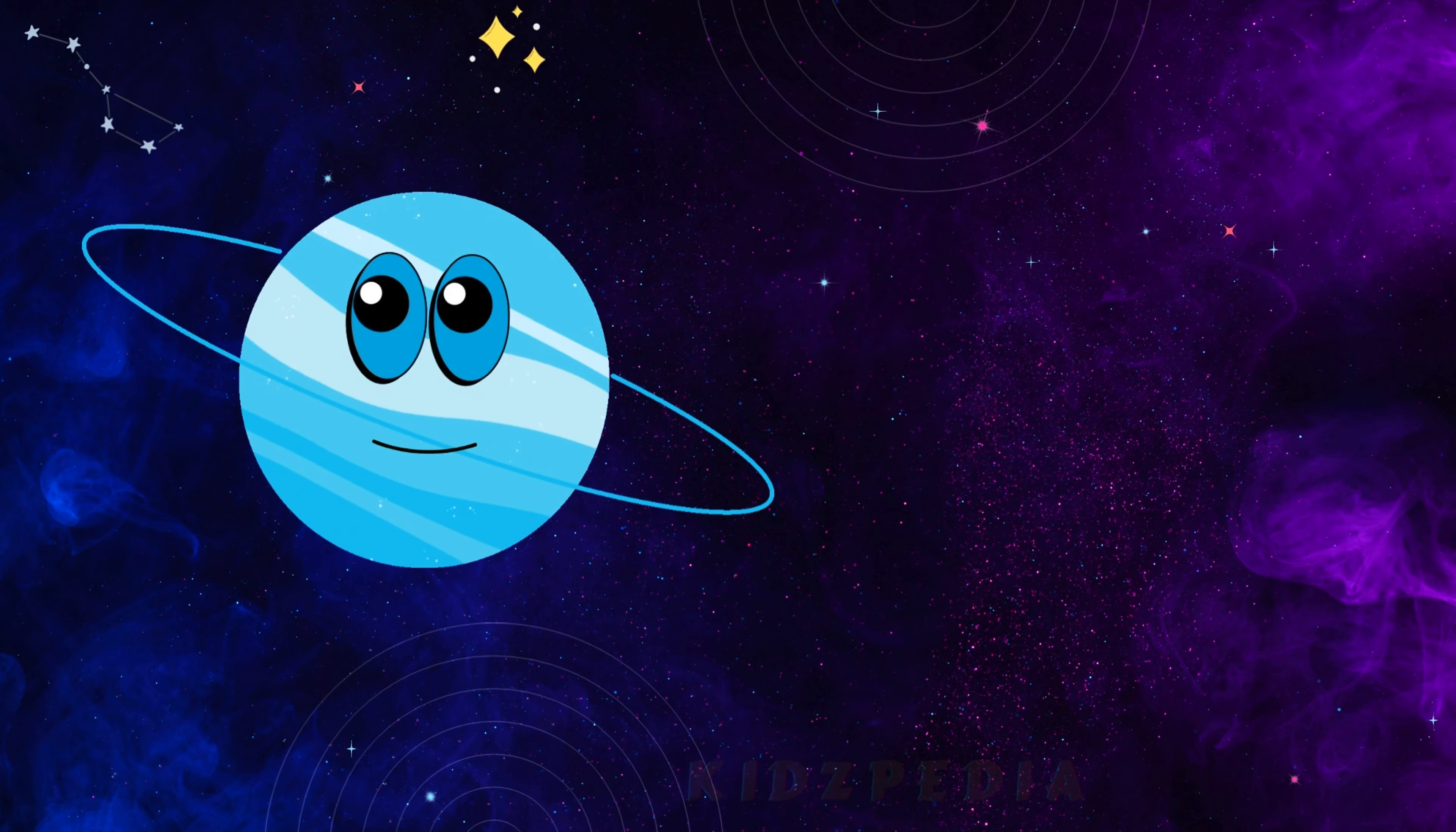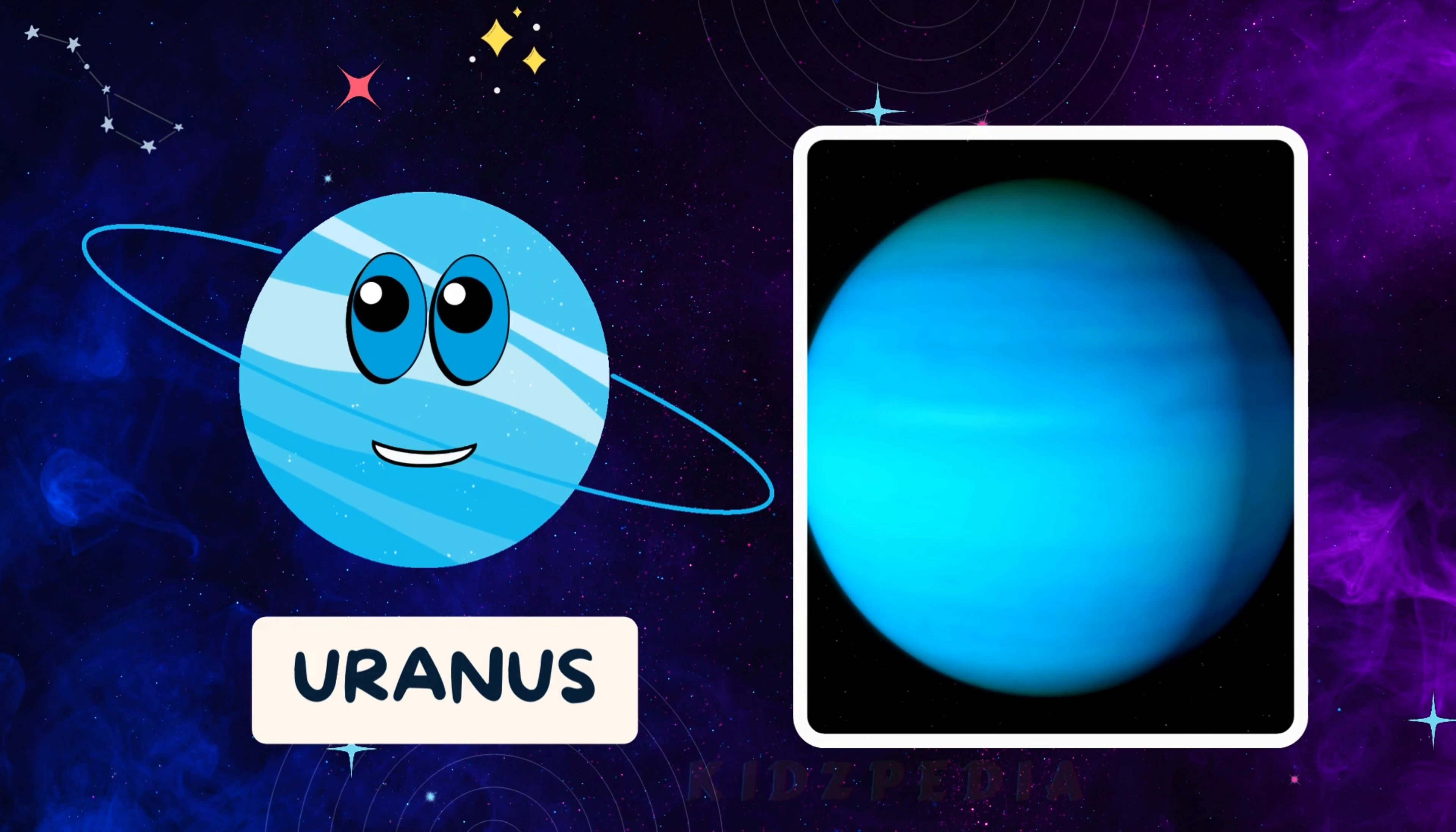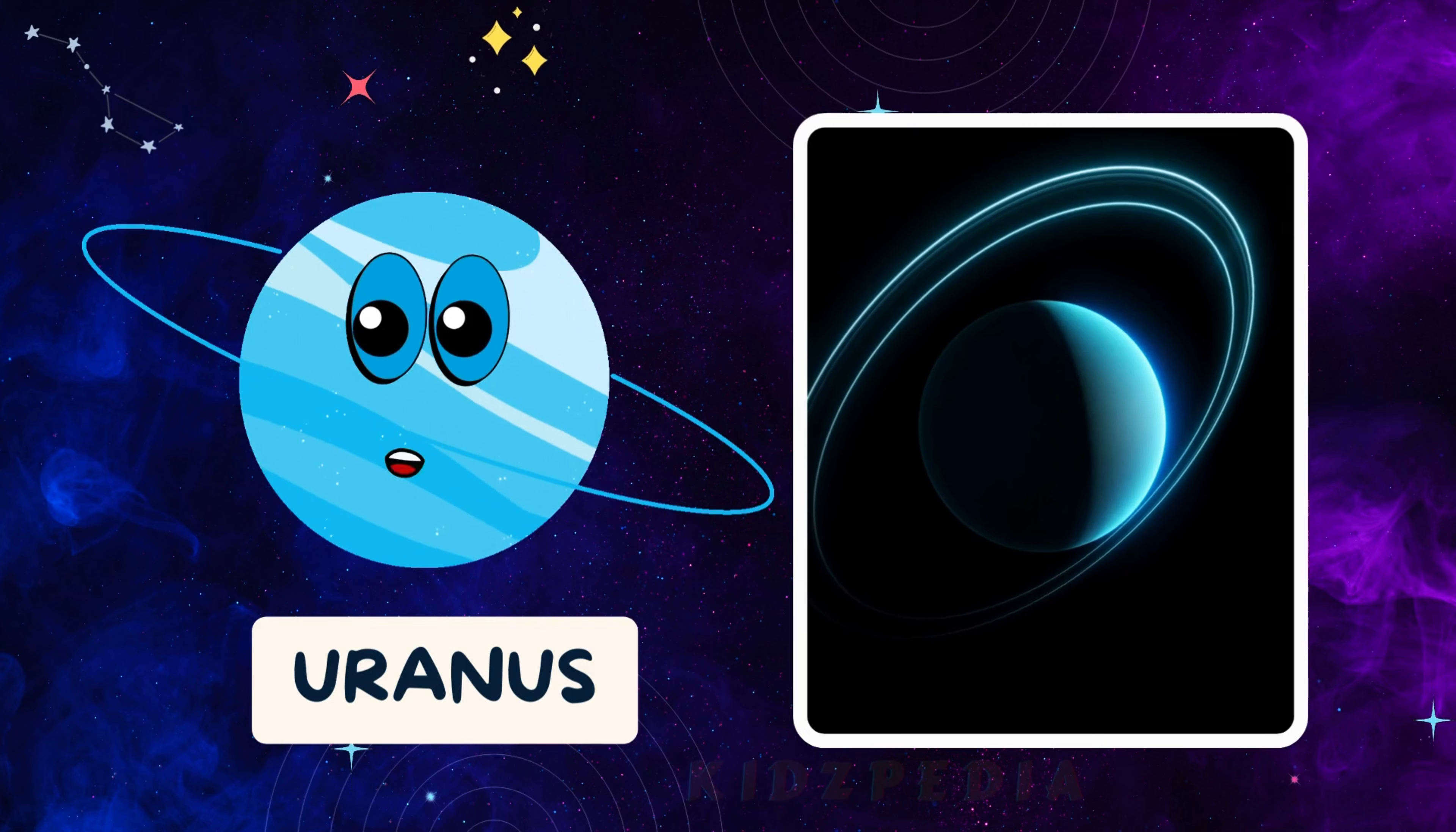Hi, kids. I'm Uranus, the seventh planet from the sun. I'm a cool blue-green planet, and I spin on my side, so it looks like I'm rolling along. I have rings, too, but they're a bit faint.